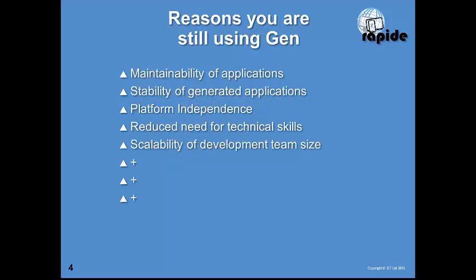Starting with the background, covering the reasons most sites are still using Gen. The key strengths that most CA Gen sites would agree on are the maintainability of applications, the stability of the applications, the ability to transfer an application from one platform to another relatively easily, the reduced need for technical skills, and the scalability from a small one or two person team up to projects having hundreds of developers. These are all key strengths of Gen — they were key strengths 30 years ago and they still are today.